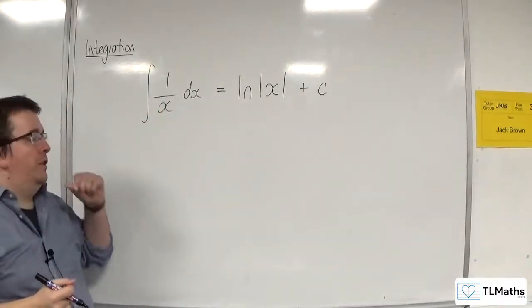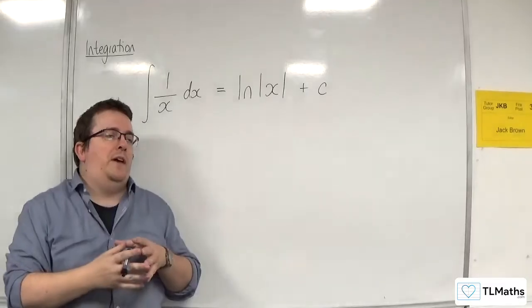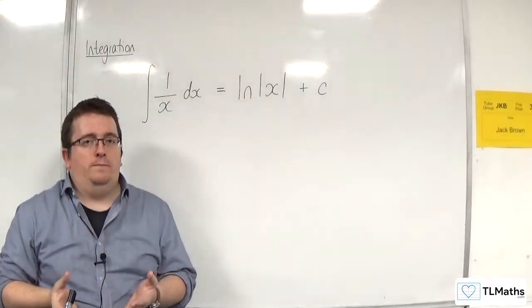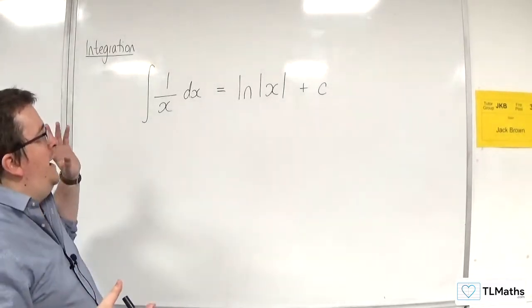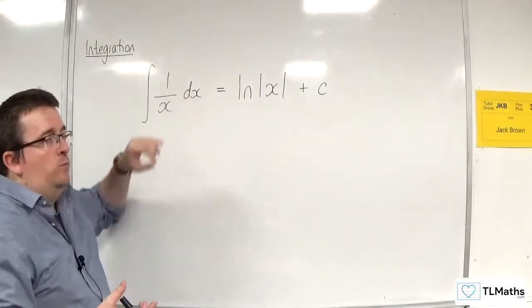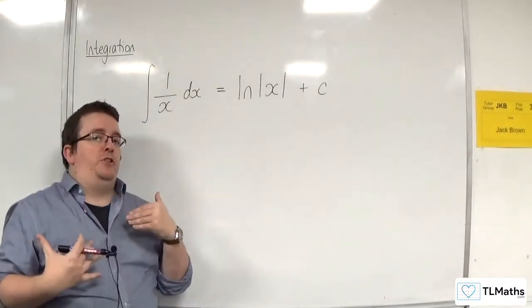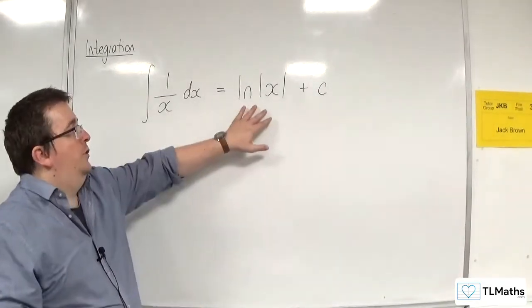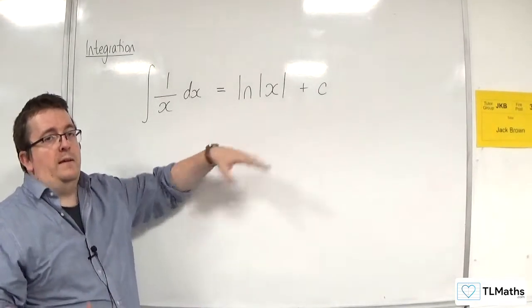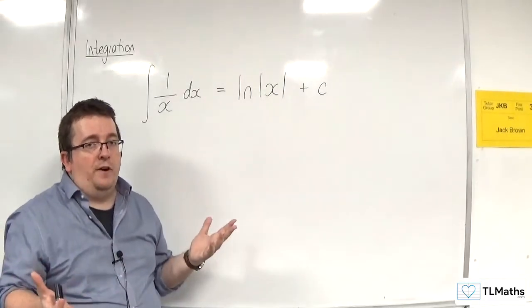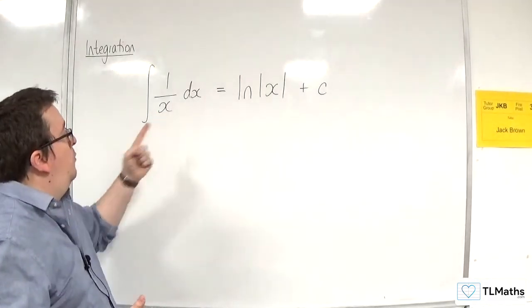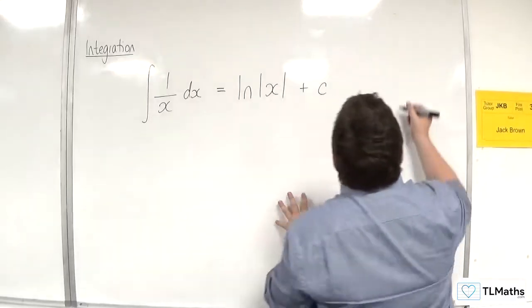Essentially, what you've got to think about here is that when we perform integration, we often have limits here because we're working with definite integrals. And we can't substitute negative values in to the natural log, because it's just undefined there. Whereas this curve 1 over x is defined there.